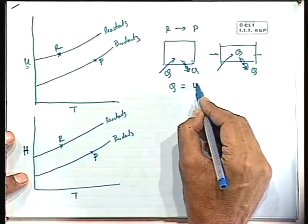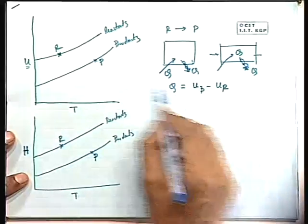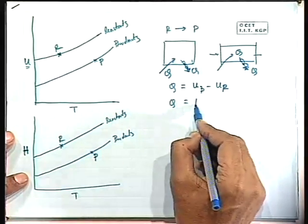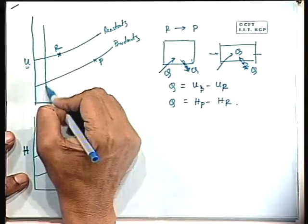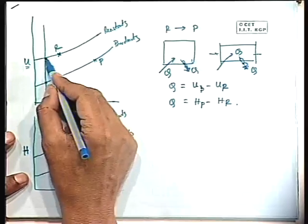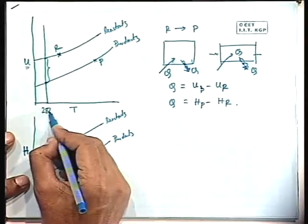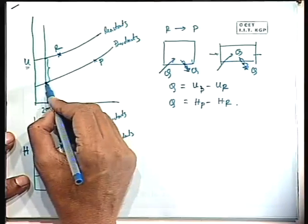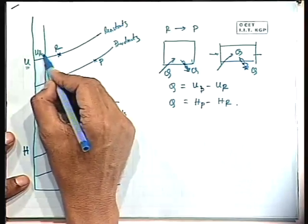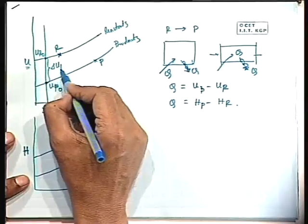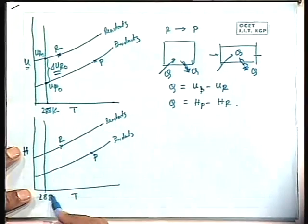We can write Q = U_P − U_R for a closed system, and for a steady flow process Q = H_P − H_R. With the definition that this difference at standard state — 25°C, 298 K — if we define the internal energy of the product as U_P0 and of the reactant as U_R0, then the difference ΔU_R0 is known as the internal energy of reaction.